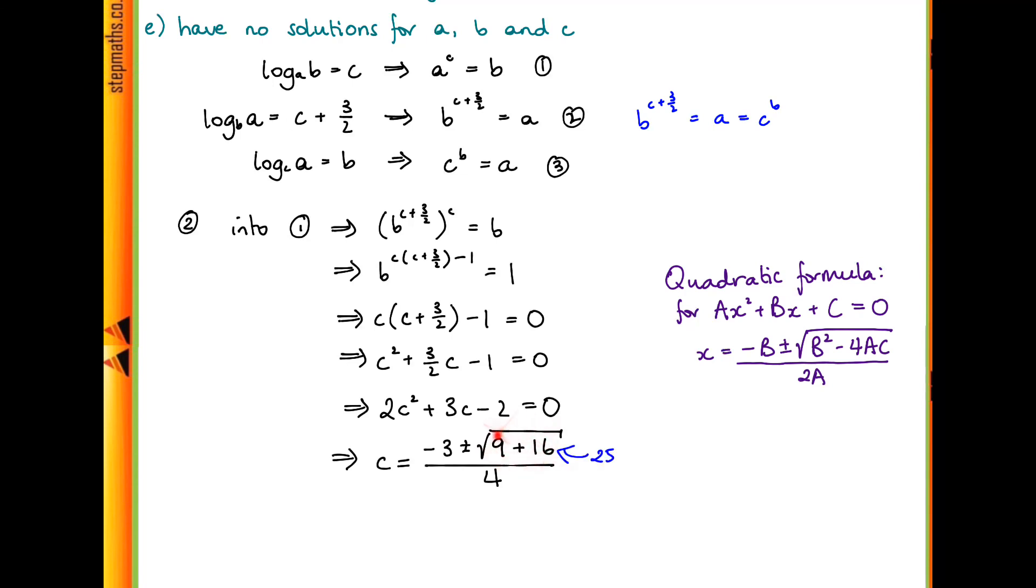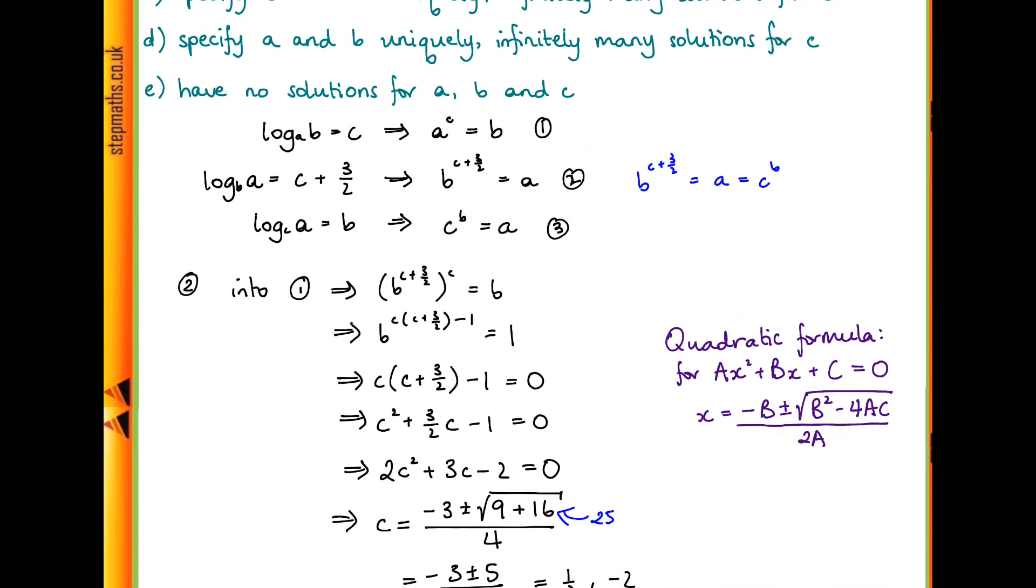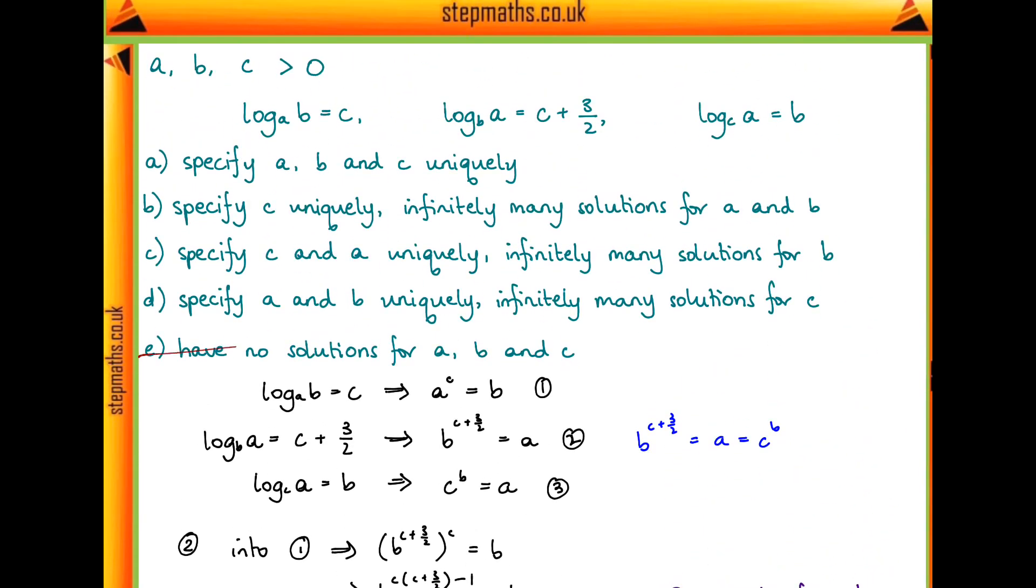If we have a square root of 25, that's just equal to 5. So c is minus 3 plus or minus 5 over 4, which if you work it out is equal to either a half or minus 2. But we know that c must be greater than 0, so we know that actually it can't be minus 2, and therefore c must be a half. So we do have a unique solution for c. We can rule out all the options where they say that c isn't unique.